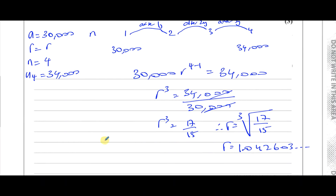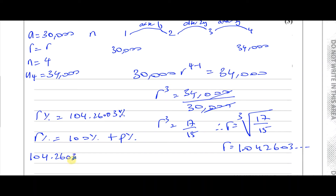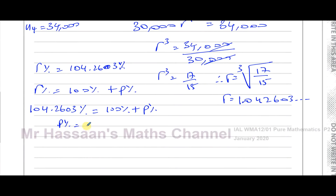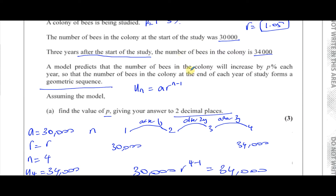As a percentage, r is 104.2603%. And we know that r% equals 100% plus the percentage increase. So 104.2603% equals 100% plus p%. Therefore, p% is 104.2603% minus 100%, which is 4.2603%. That means p is equal to 4.26 to two decimal places. So the colony increases by 4.26% each year.